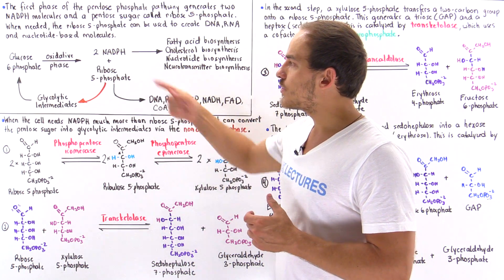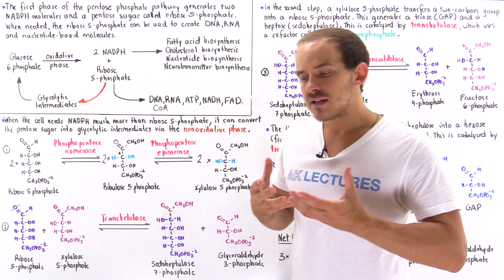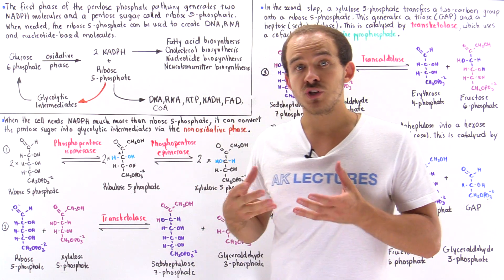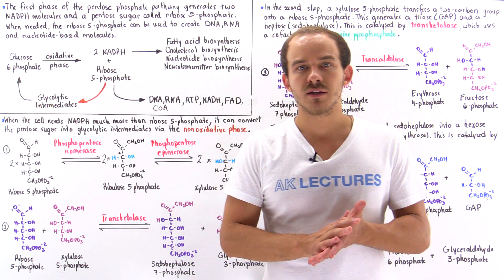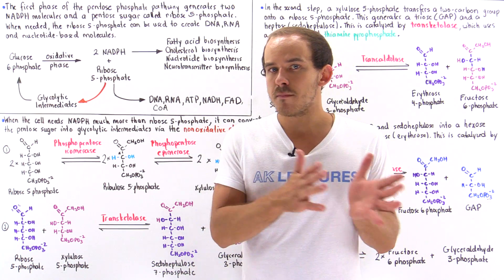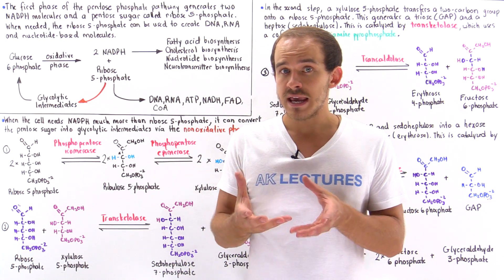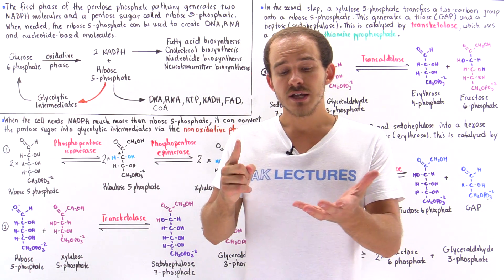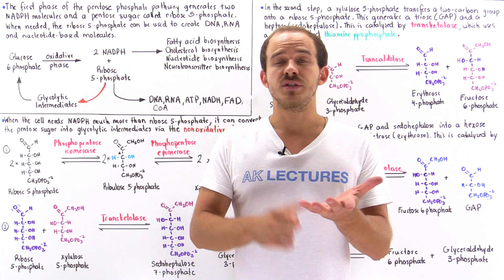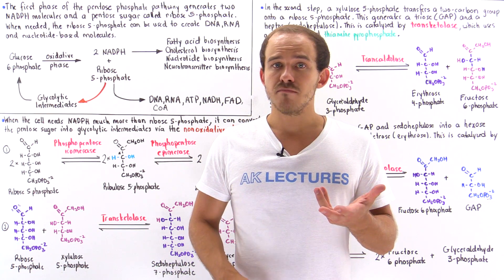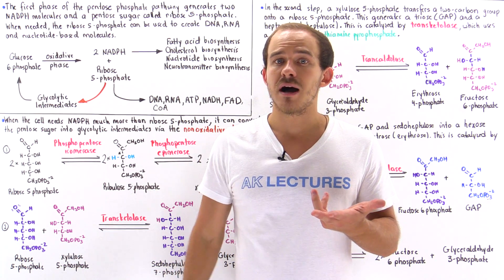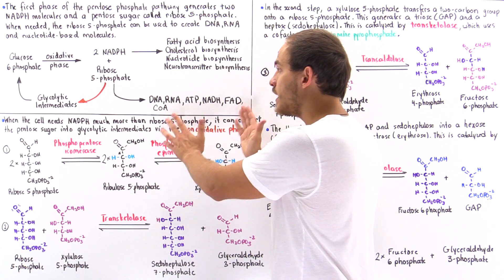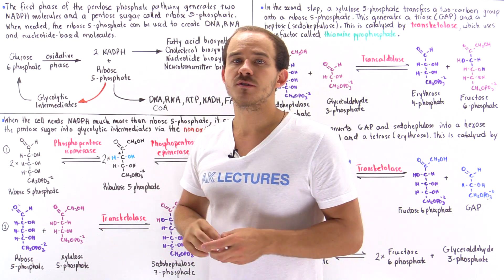The ribose 5-phosphate molecule is used by cells to help generate nucleotide-based biological molecules. Any time a molecule contains a nucleotide, it requires ribose 5-phosphate. This includes nucleic acids such as DNA and RNA, ATP molecules, NADH molecules, FAD molecules, and coenzyme A molecules.